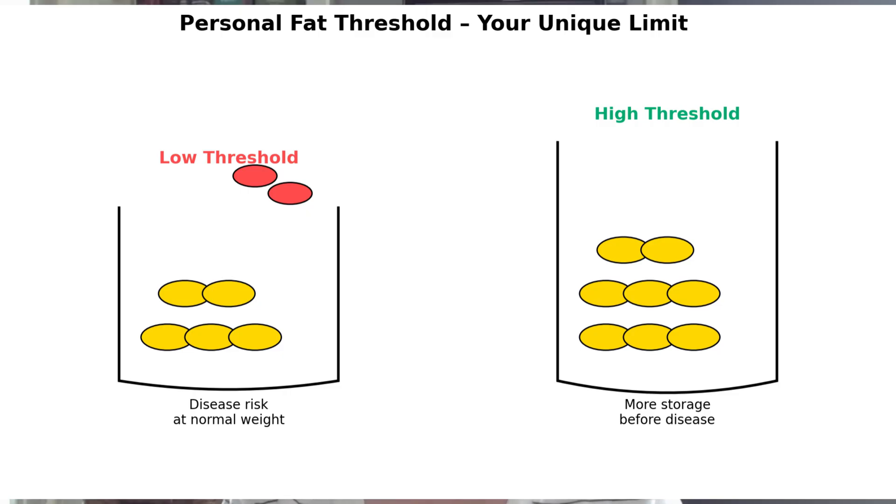Let's talk about personal fat thresholds — your unique limit. Each of us has a personal fat threshold, a point where our fat cells can't safely store any more energy. Once that threshold is exceeded, fat starts spilling into the liver, pancreas, and muscles, and lipotoxicity begins. People with a low threshold may develop type 2 diabetes, fatty liver, or high blood pressure even at a normal BMI. People with higher thresholds can gain more weight before they cross into metabolic disease. It's about whether you've passed your body's storage limit.